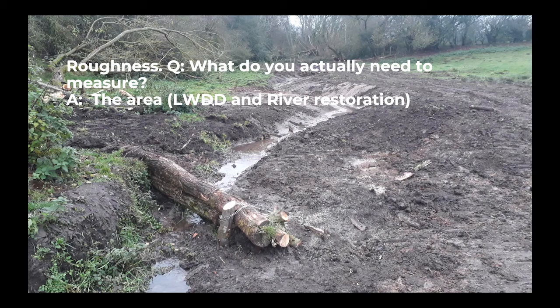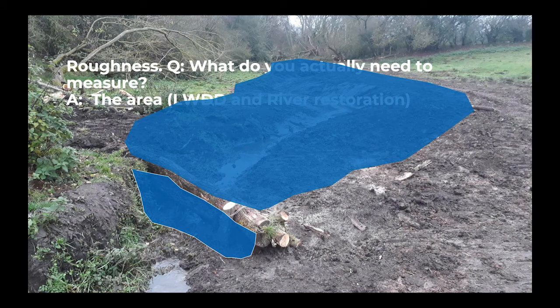Large woody debris dams and river restoration also roughen up a catchment. What you would record for a large woody debris dam is the lower of the two polygons on this slide — it's the cross-sectional area of the large woody debris dam. A question came up in the live webinar saying it's not comparing apples with apples because the area of a large woody debris dam isn't really comparable with the area of forestry. That's fine, because in the Agol tool we differentiate between a large woody debris dam and an area of forestry, so we can associate an area with large woody debris dams and a separate area with forestry. The second, larger polygon is the area of river restoration where you've increased roughness, and that's the area you would record in the Agol tool associated with river restoration.